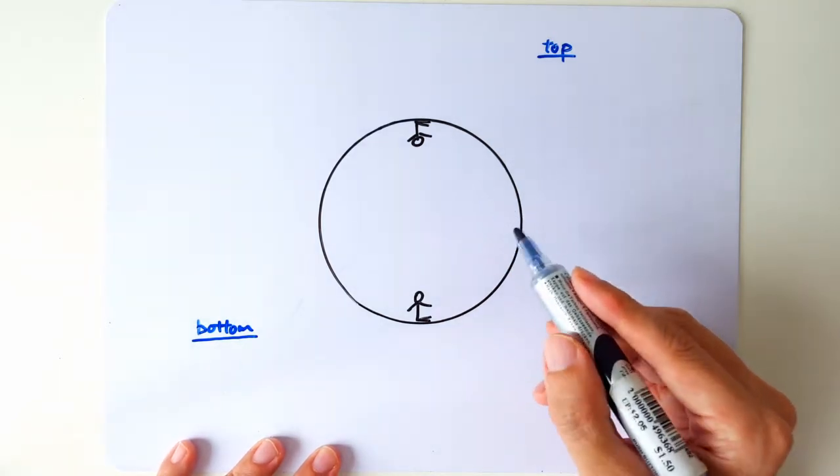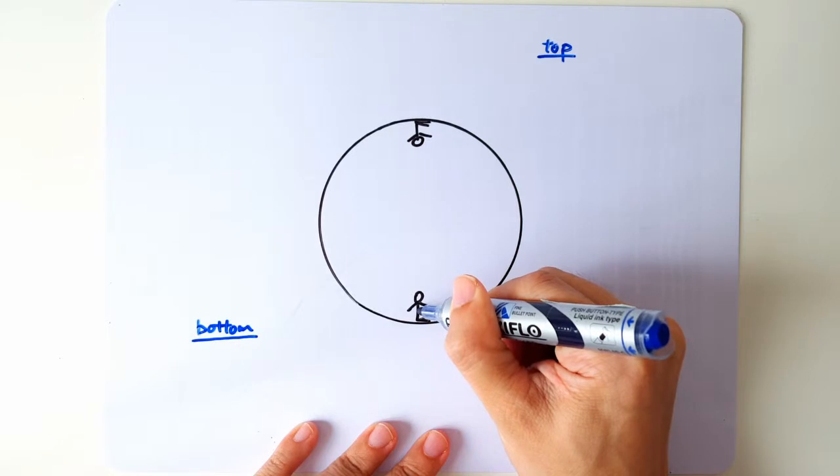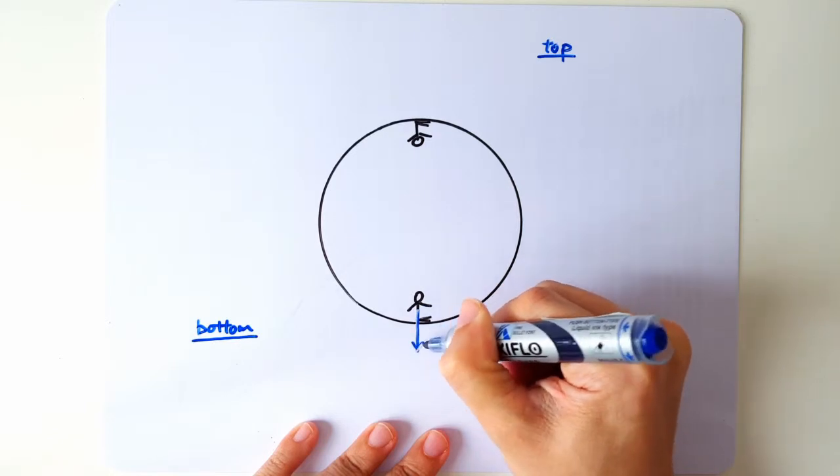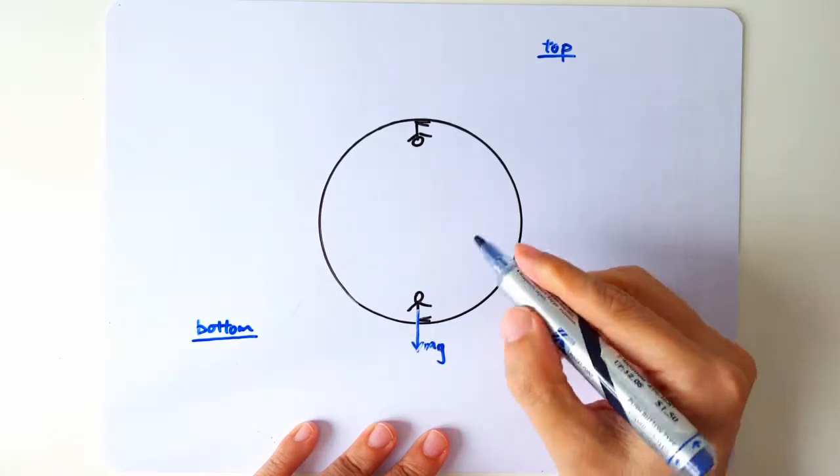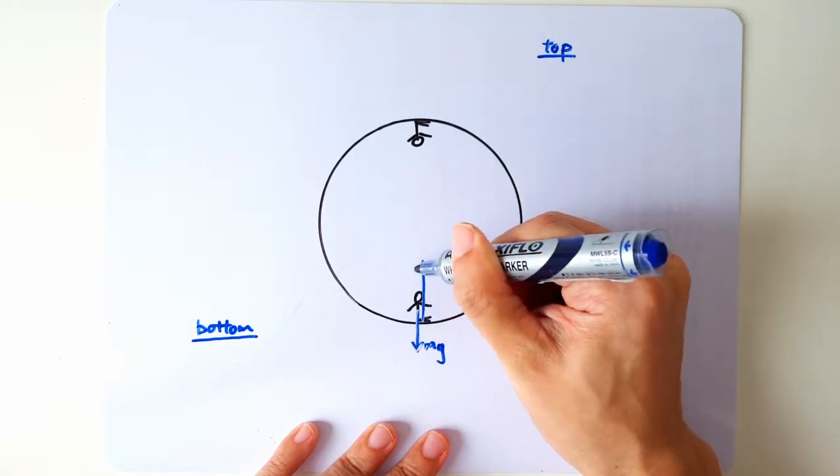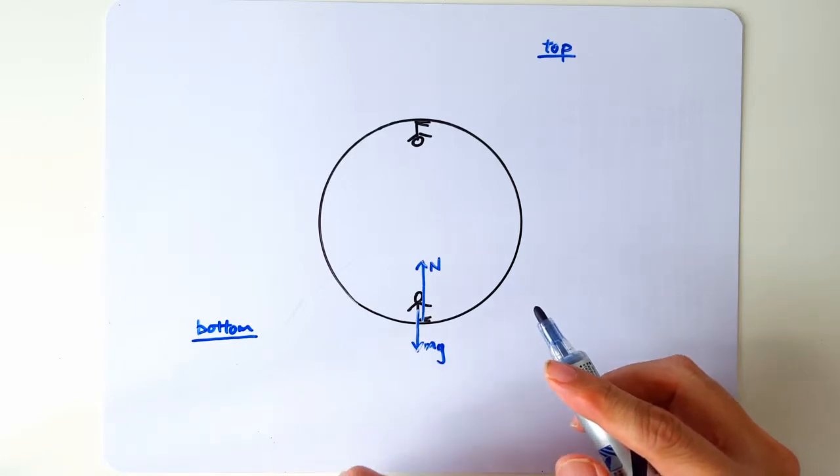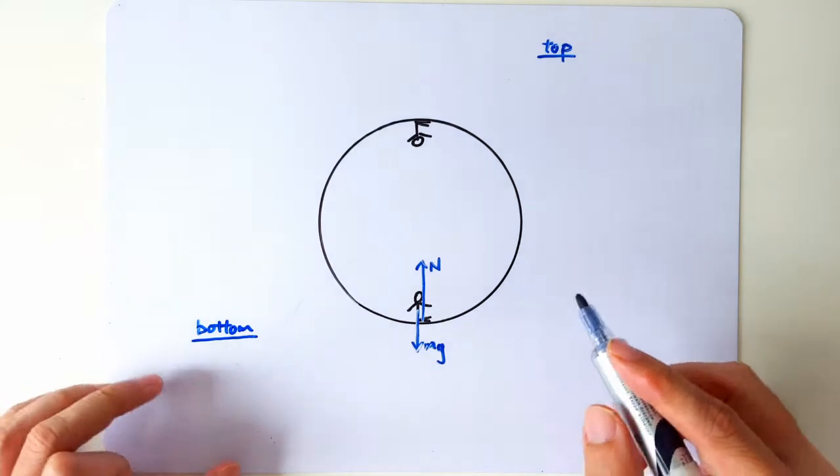Let's start from the bottom position. When you're at the bottom, the forces acting on you are your weight acting downward and the upward normal contact force. This is the force that the ride exerts on the passenger mentioned in the question, so that's the normal contact force.